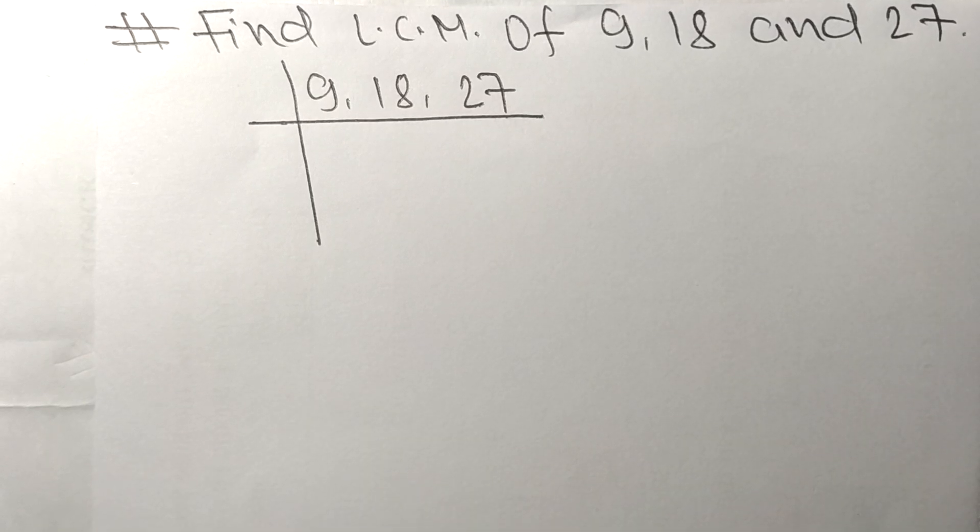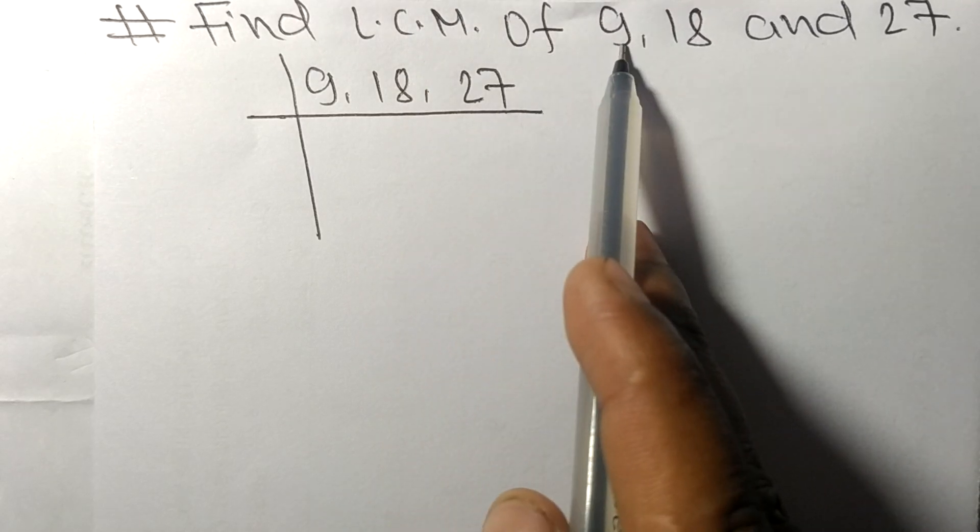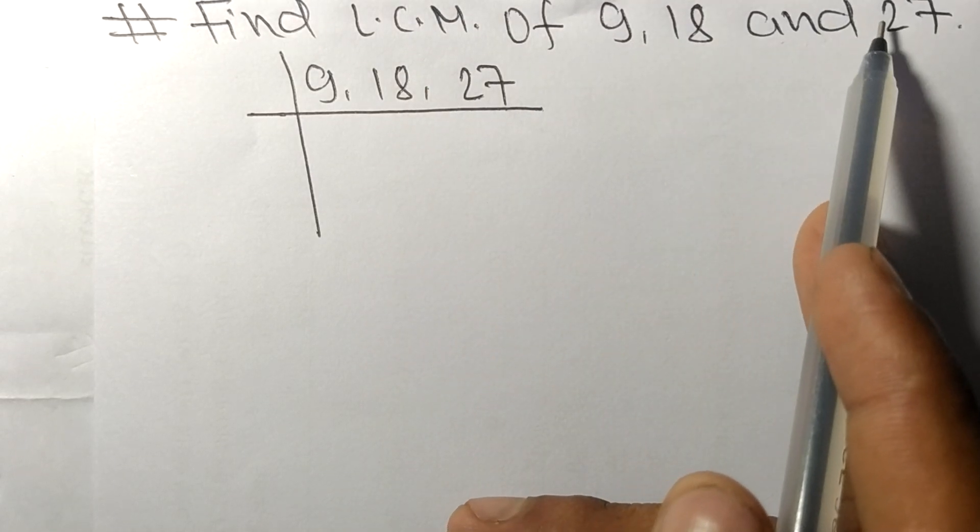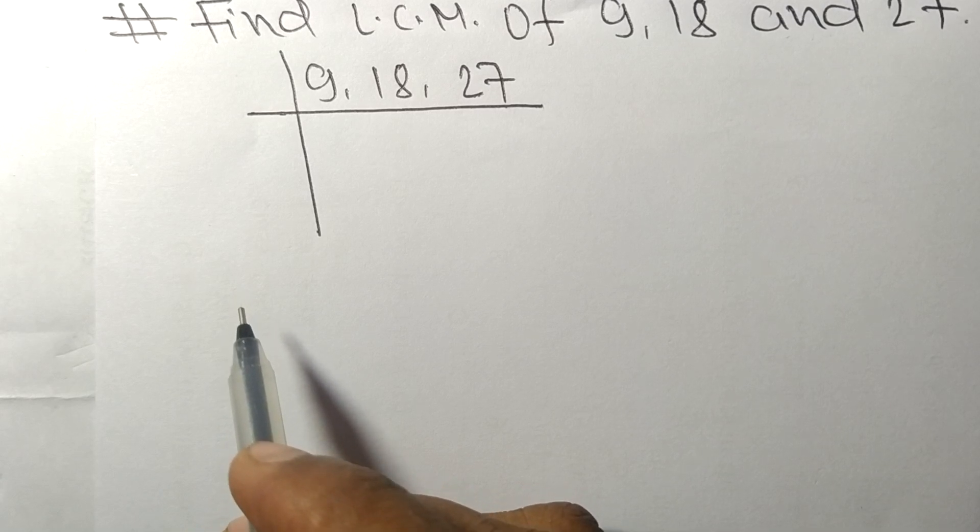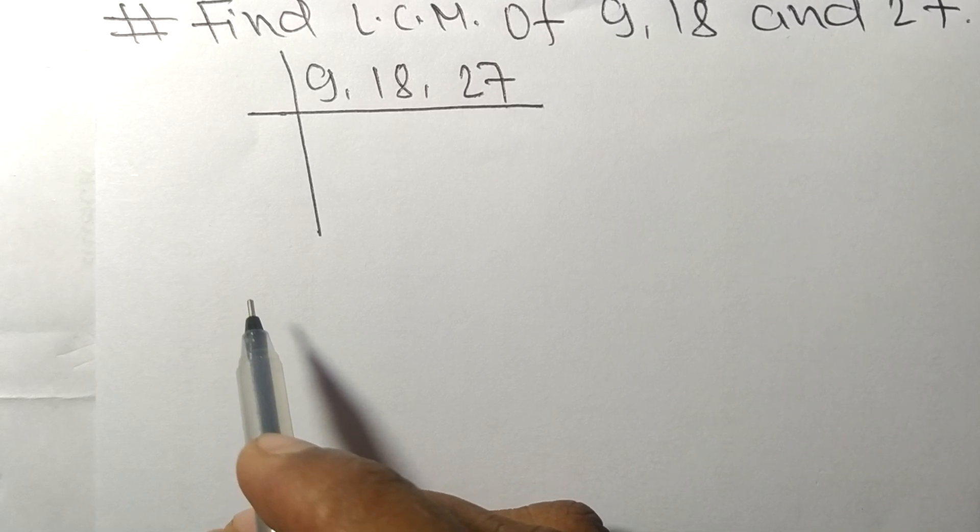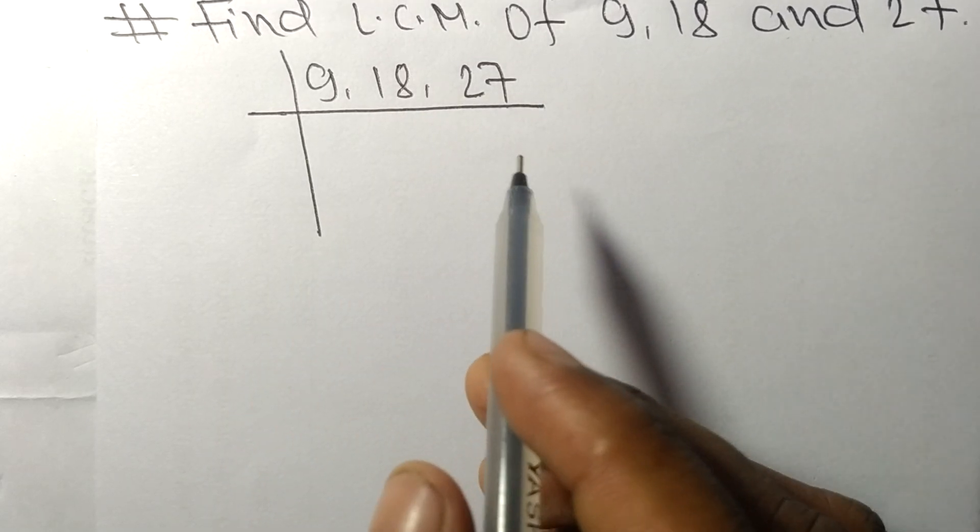So today in this video we shall learn to find the LCM of 9, 18, and 27. To find LCM, we have to choose the lowest number that can exactly divide at least any two of these numbers.